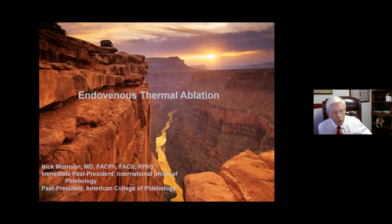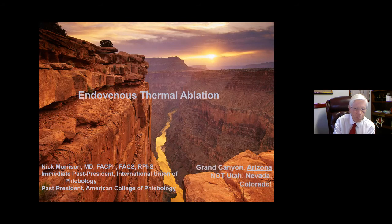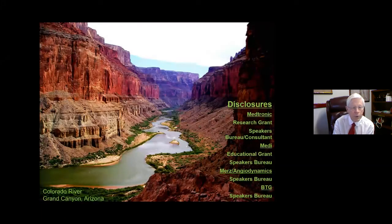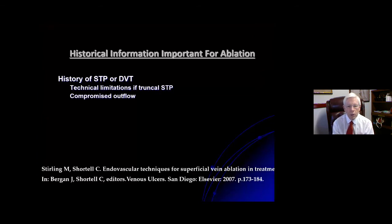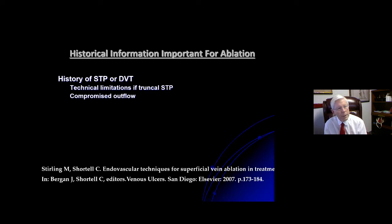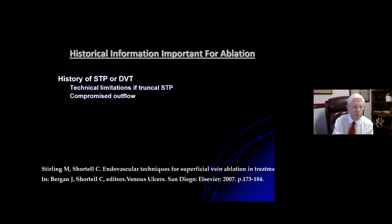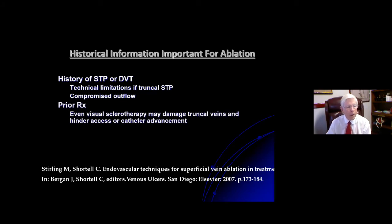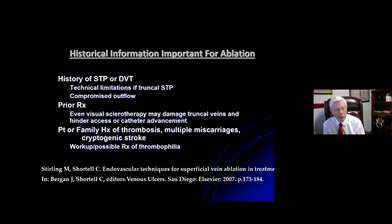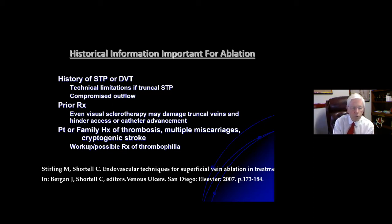We're going to move on from foam to thermal ablation. There is historical information important before contemplating any ablation on the saphenous system. If the patient has a history of superficial thrombophlebitis or DVT, this may technically limit how well you can treat. If there is compromised outflow in the deep system, the superficial system may be the main outflow tract. Prior treatment — even visual sclerotherapy — can damage truncal veins and hinder catheter advancement. If the patient or family has a history of thrombosis, multiple miscarriages, cryptogenic stroke, workup for thrombophilia may be appropriate.